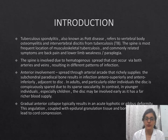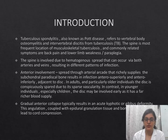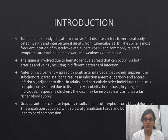Tuberculosis spondylitis, also known as Pott's disease, refers to vertebral body osteomyelitis and intervertebral discitis from tuberculosis. The spine is the most frequent location of musculoskeletal tuberculosis, and commonly added symptoms are back pain, lower limb weakness, and paraplegia. The spine is involved due to hematogenous spread that can occur via the arterial veins, resulting in different patterns of infection: anterior involvement, posterior involvement, and central involvement.